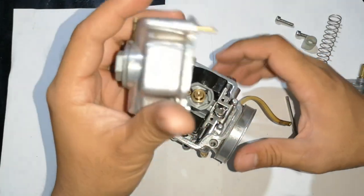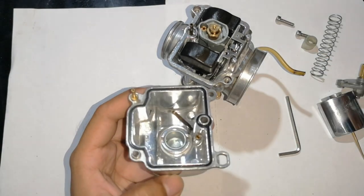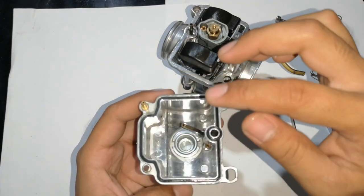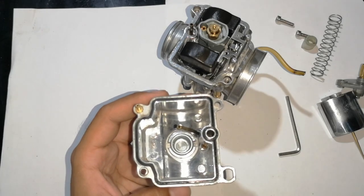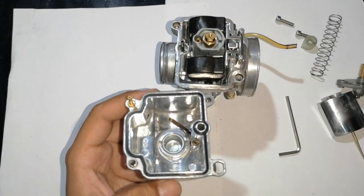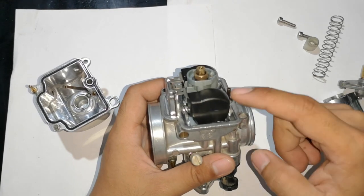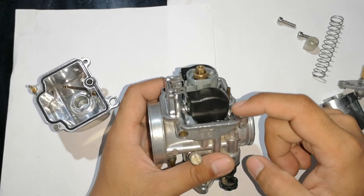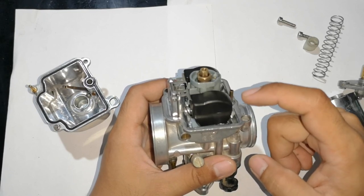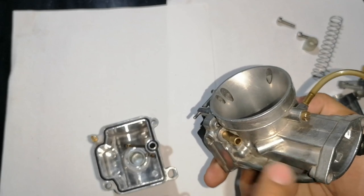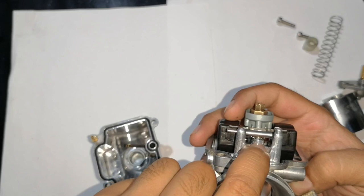So, ito, ito ang tinatawag natin na float bowl or float chamber. Bali dito na-store ang fuel natin. Para may ma-soyo ang ating carburador. Dito naman, sa loob ng carb natin, meron tayong tinatawag na float. Ito yung float. Ito yung nagkocontrol ng pasok ng gasolina. Dito dumadaan yung gasolina, hose galing sa tanke, papunta dito, papasok, at dito lalabas. Ayan.